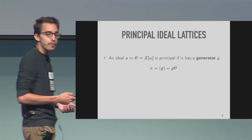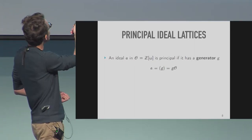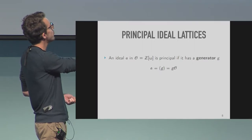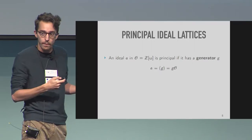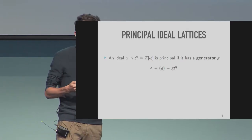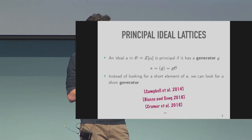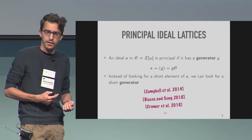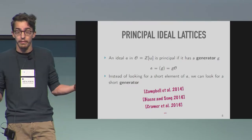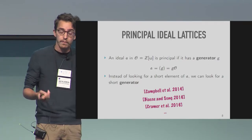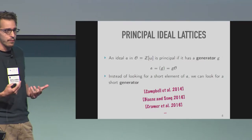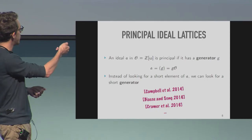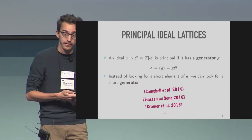A principal ideal is an ideal that has a generator, meaning A is principal if it has a generator G — an element such that A is just G times the ring O. Instead of looking at the problem of finding short elements in A, you can look at the problem of finding short generators of A. It sounds like you're making the problem more difficult, because now you're asking for something short that is also a generator, but it's making the problem simpler by highlighting the relevant algebraic structure. This is the approach taken starting with Campbell et al. in 2014.